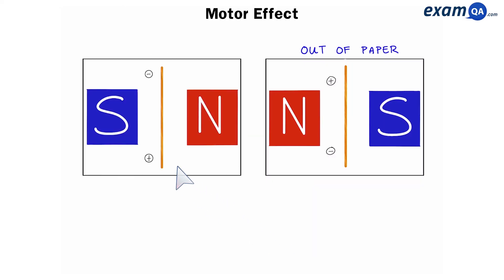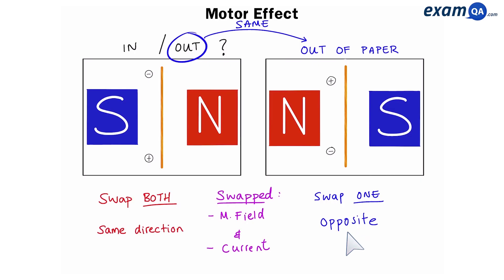How about in this example? We've swapped the magnetic field, and we've swapped the current. So, will the wire go into the paper, or will it go out of the paper? The answer is that the wire will go out of the paper, just like in the first example. Remember, if you swap one thing, the wire will move in the opposite direction. However, if you swap both, then the wire will move in the same direction as the original.